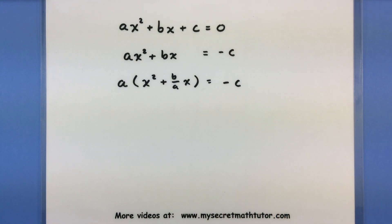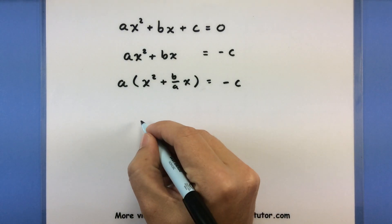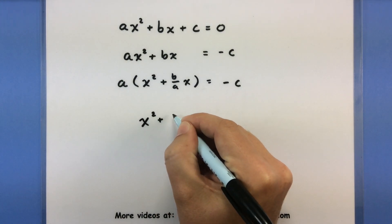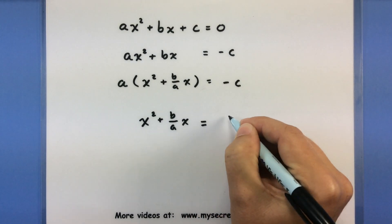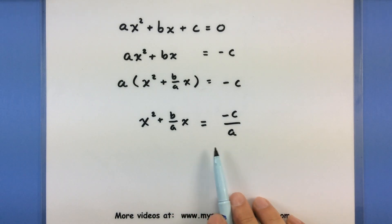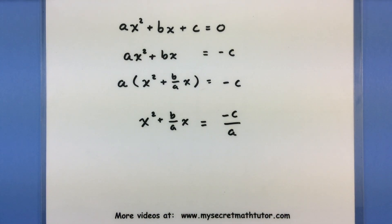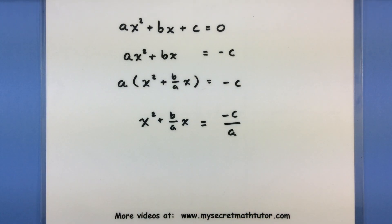Alright, things are looking pretty good. I want to move that a to the other side, so let's divide both sides by a. This gives us x² + (b/a)x = -c/a. I've made sure that the variables are on one side and there's no coefficient in front of the x² term, so I'm in really good shape to move forward and complete the square.